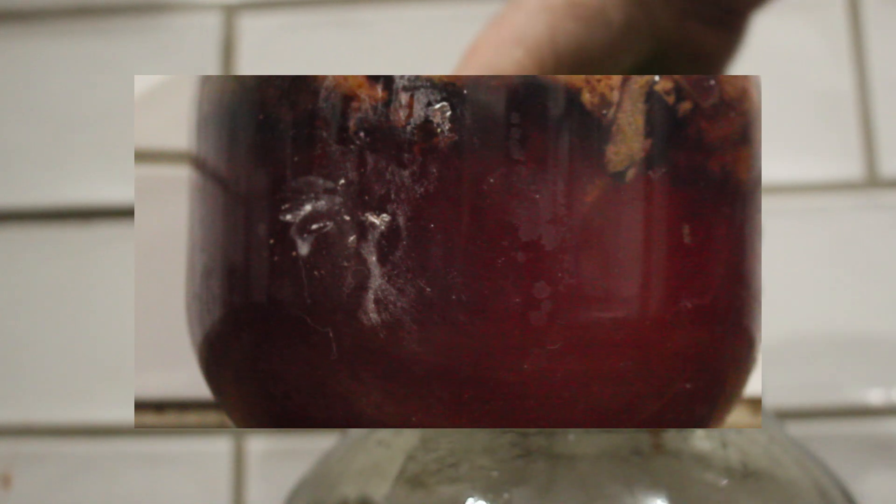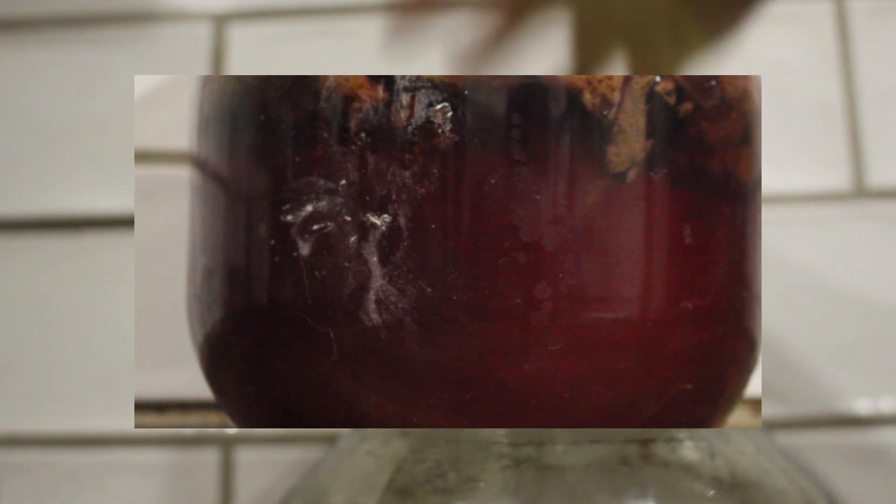After the fermentation stops bubbling in your airlock, leave the wine to settle for several weeks. This will remove most if not all of the plum solids from the fermentation, or at least the larger solids.